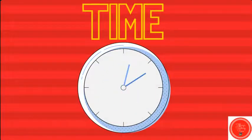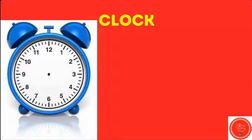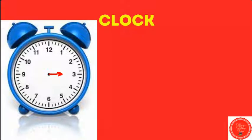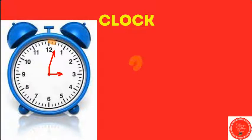Let's talk about time. The shorthand tells the hour. My shorthand is going to point to the number three. The longhand tells the minute. When my longhand points to the 12, that shows three o'clock. Now we're going to go forward two minutes. Our hand is still pointing to the three, but now our minute hand is pointing at the two. So we've gone forward two minutes. That means the time is now 3:02.